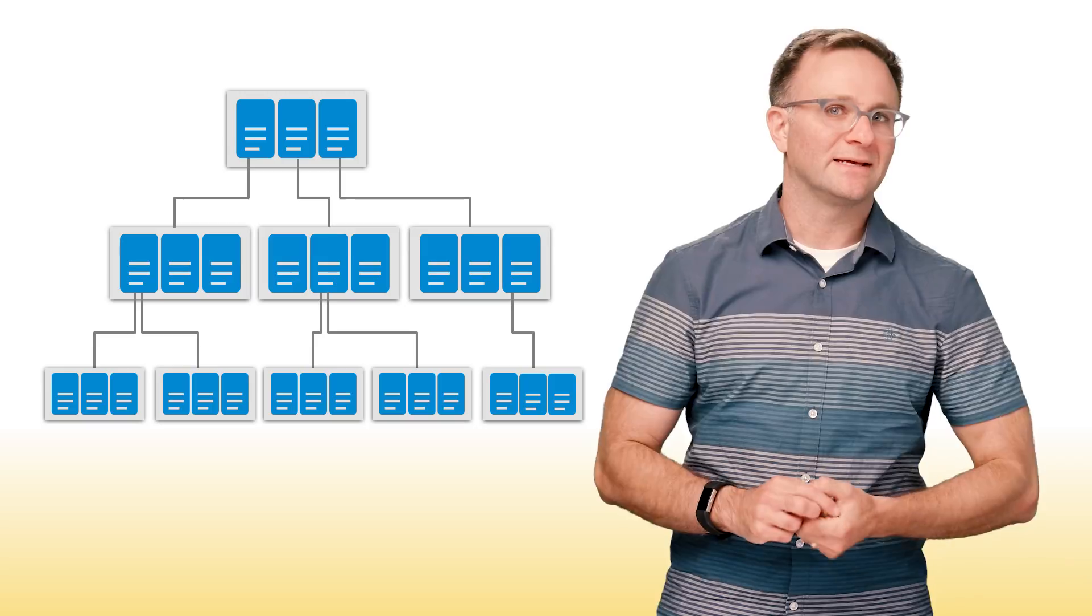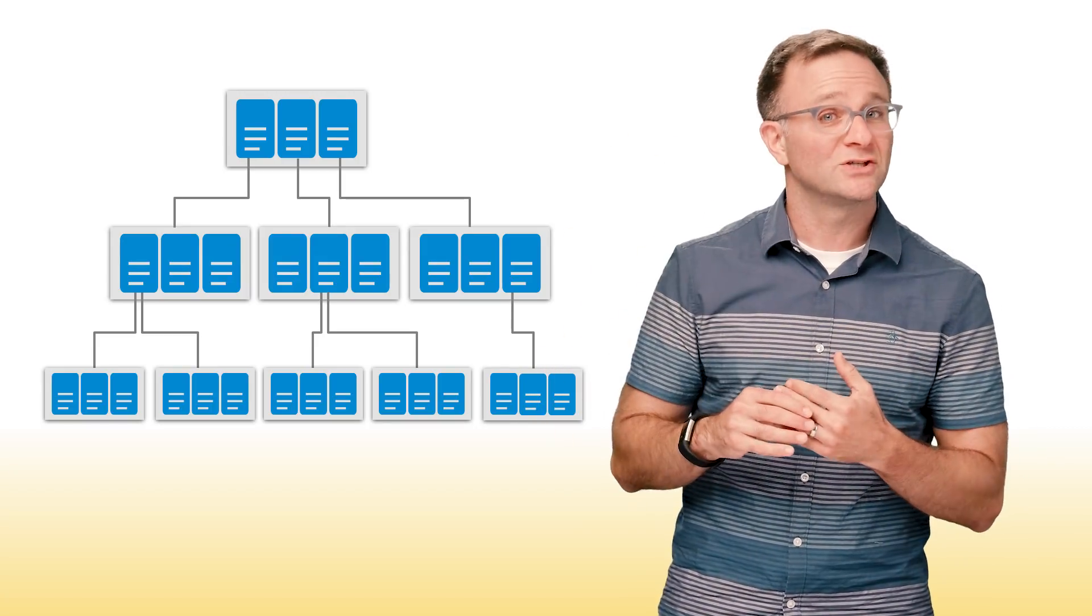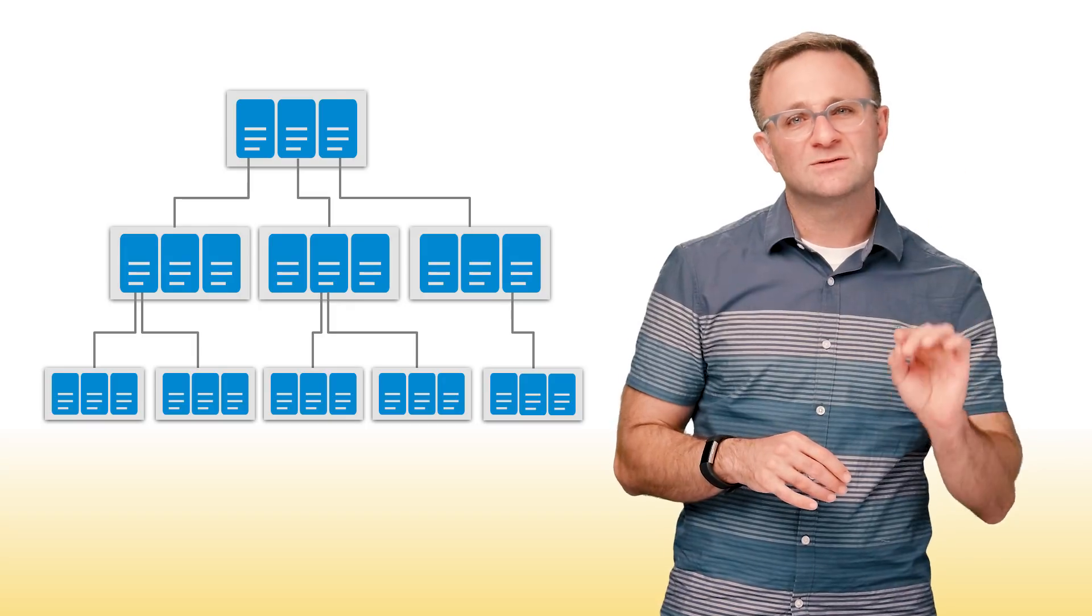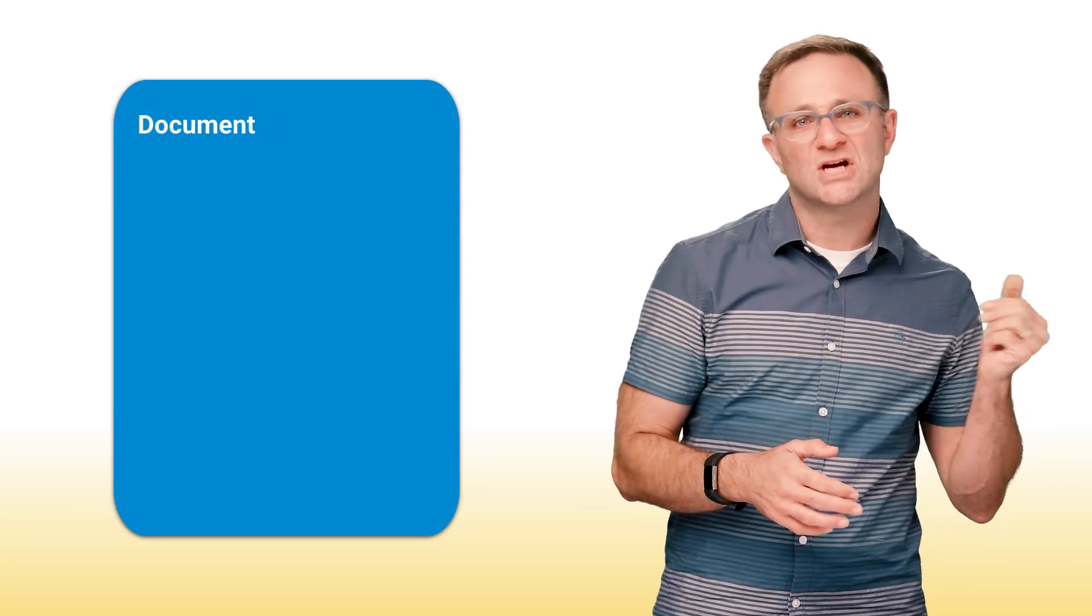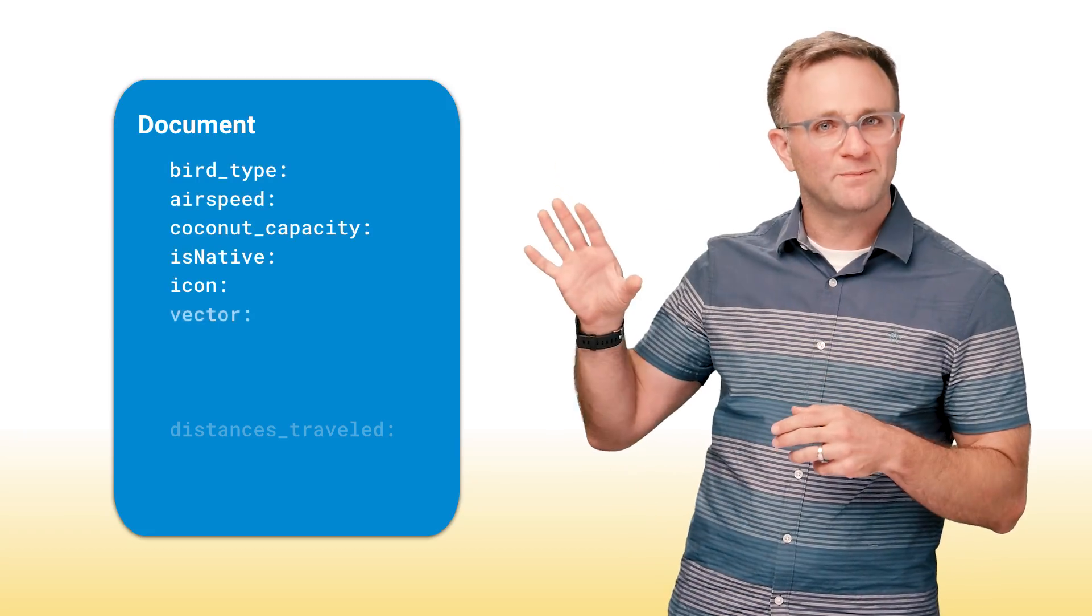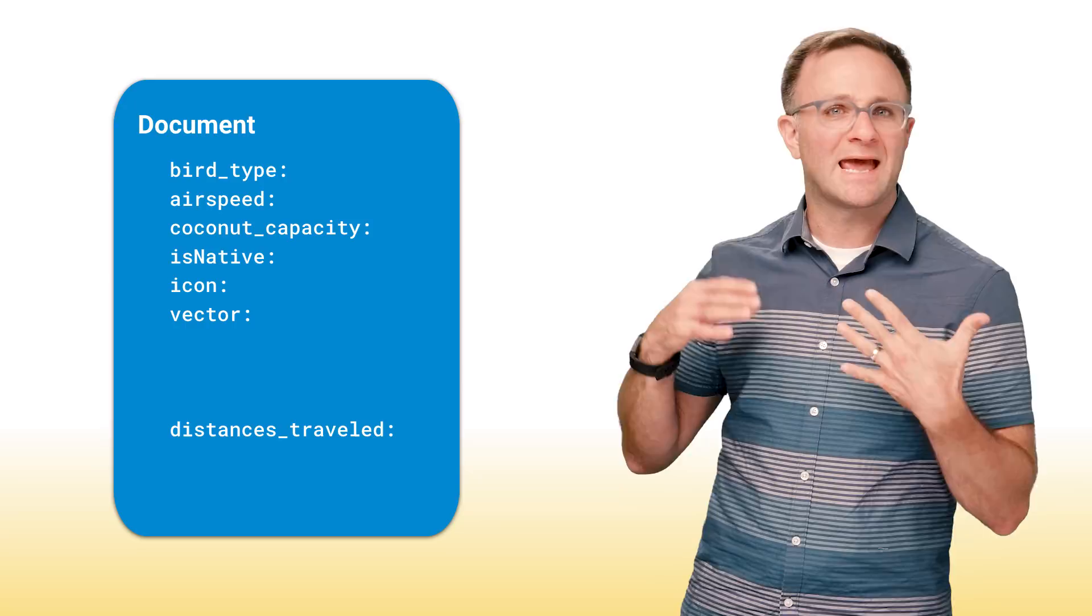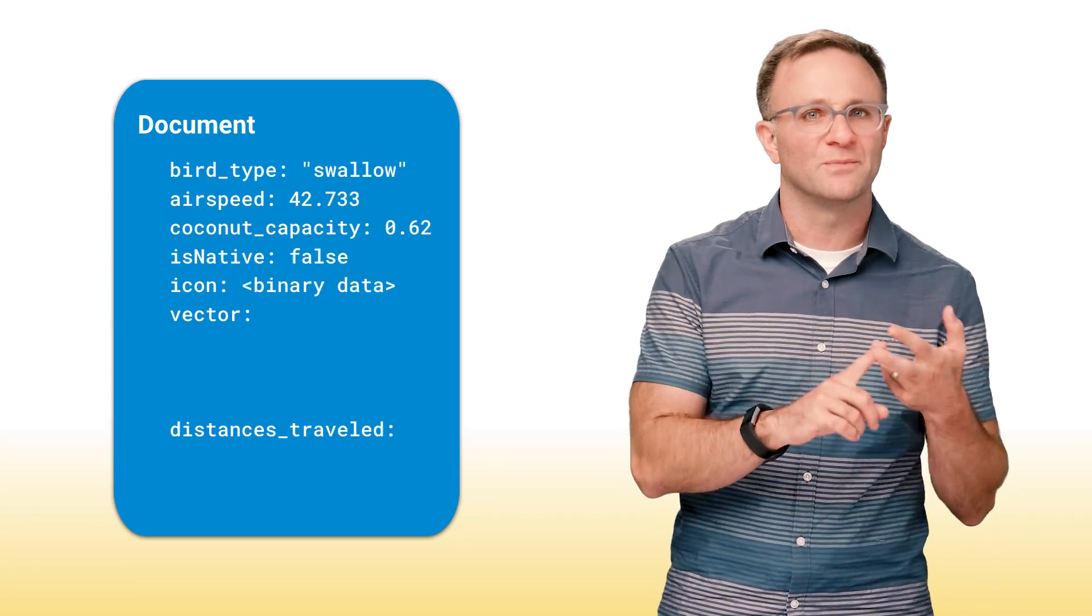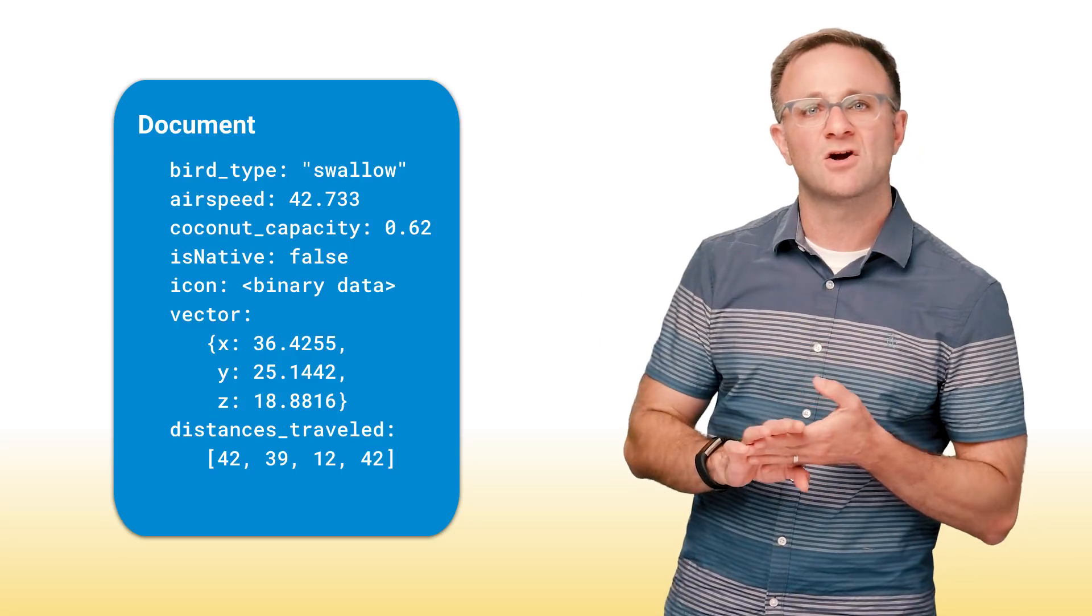Cloud Firestore is a document database. That means it kind of stores your data in a big tree-like structure, a bit like the original real-time database. But everything is placed into documents and collections. You can think of a document as something like a JavaScript object. It's got key value pairs, which we like to refer to as fields. And the values of these fields can be any number of things, from strings, to numbers, to binary values, to little JSON-y looking objects that the team likes to call maps. And collections are basically collections of documents.